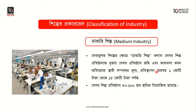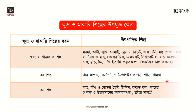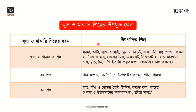Consumer goods produced under small industries include water, milk, sugar, chocolate, cigarettes, juice, and similar food and beverage items. These goods are produced and distributed through the market.